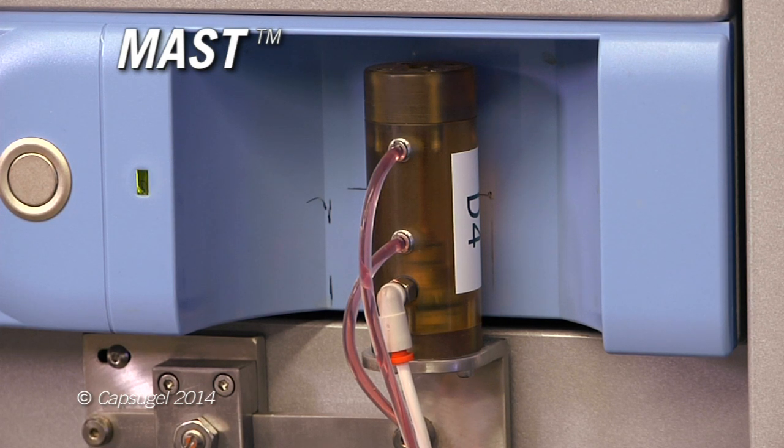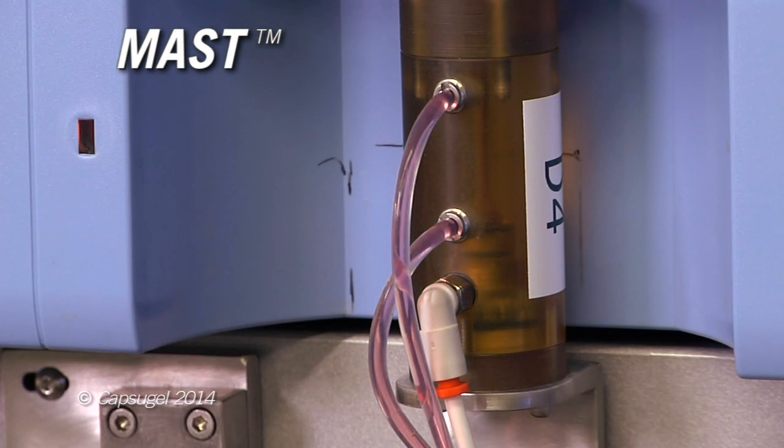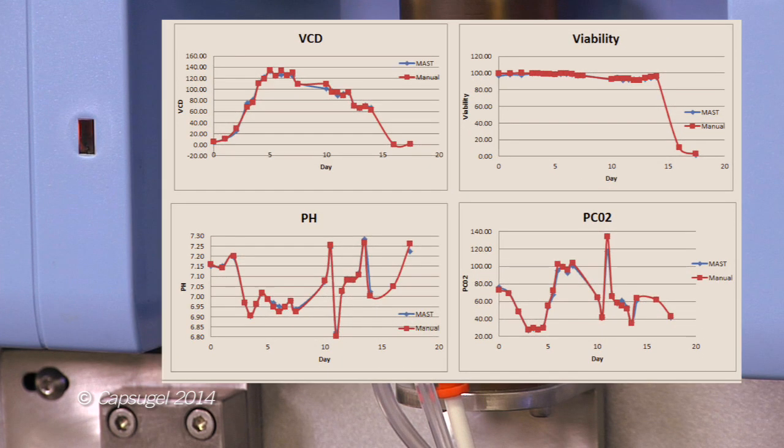Multiple units have been installed at client facilities. Automated sampling to the NOVA has been repeatedly demonstrated at Pfizer and in-house to be consistent with manual sampling. Viable cell density as well as viability are very consistent. The pH between MAST and manual is virtually identical, as is dissolved carbon dioxide.